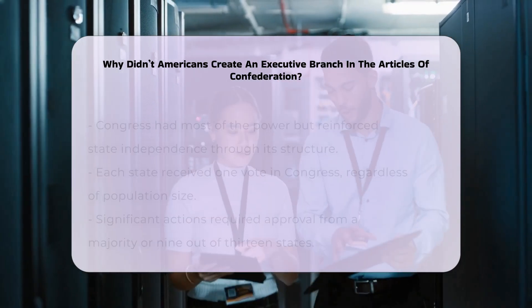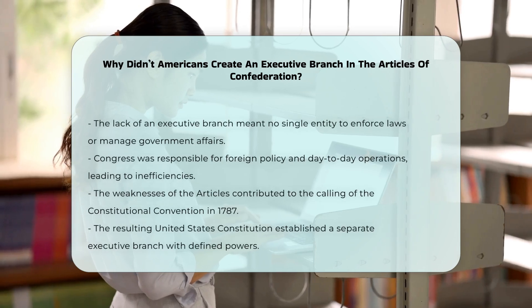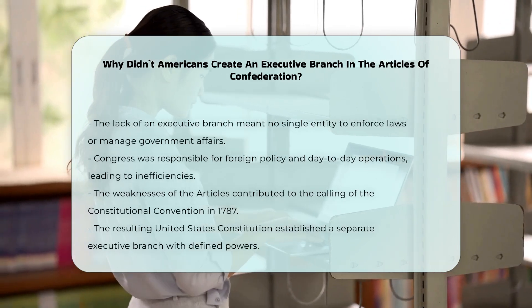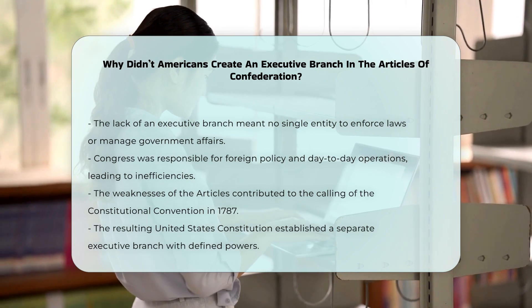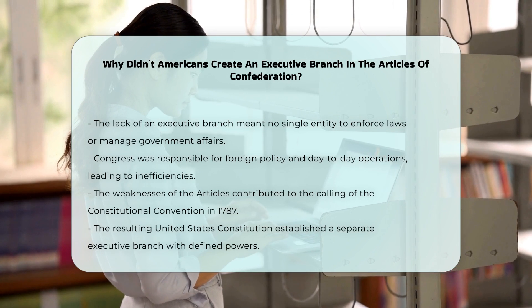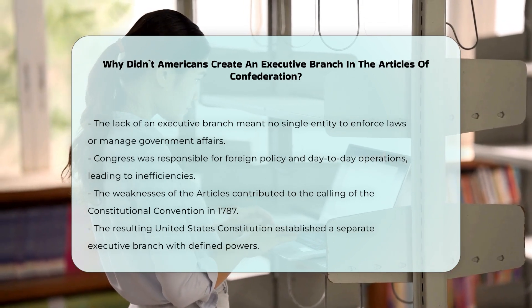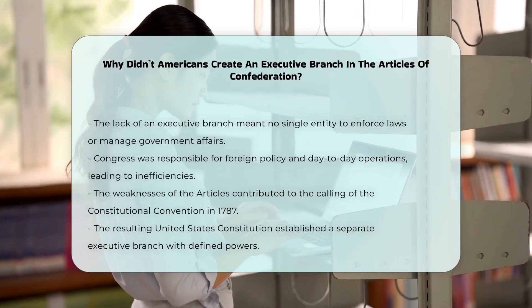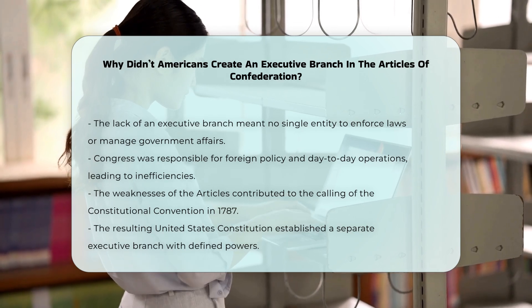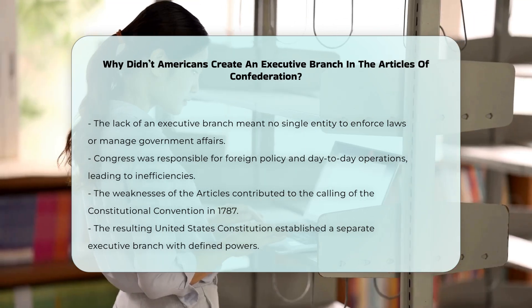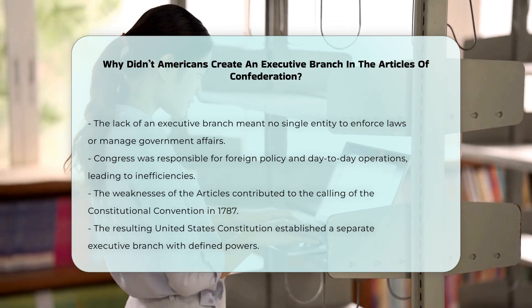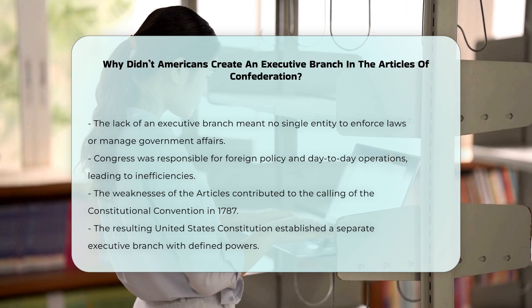Instead, Congress itself had to handle these responsibilities, which often led to inefficiencies and a lack of cohesive leadership. The weaknesses of the Articles of Confederation, including the absence of an executive branch, were significant factors that led to the Constitutional Convention of 1787. This convention ultimately resulted in the drafting of the United States Constitution, which included a separate executive branch with defined powers and responsibilities.